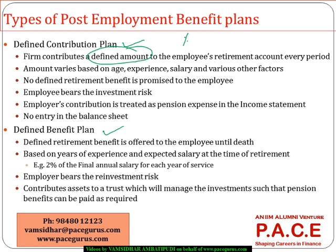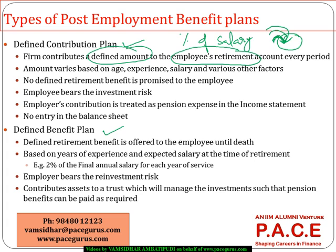The company contributes a constant proportion of the salary or a constant amount every year or every month to the retirement account of the employee. For every month of service with the company, some portion is contributed to the pension retirement account. Depending on the number of years or months of service, the contribution keeps growing, but once this pool is formed and the person retires, the company is not taking responsibility for distributing the funds.